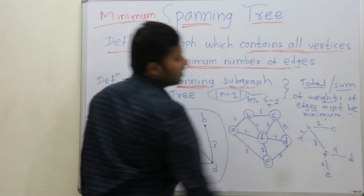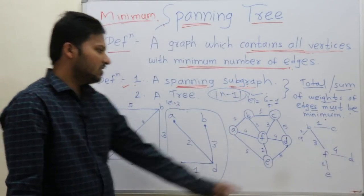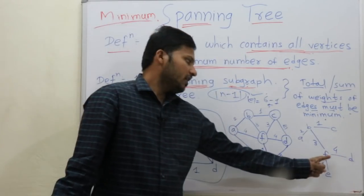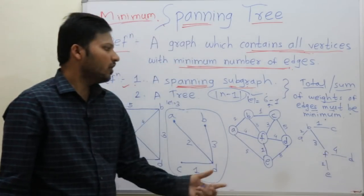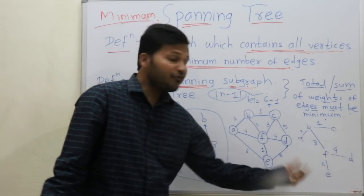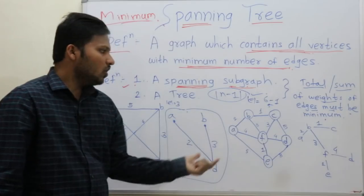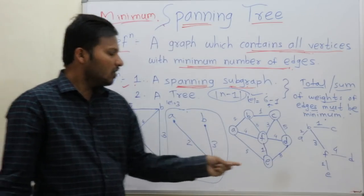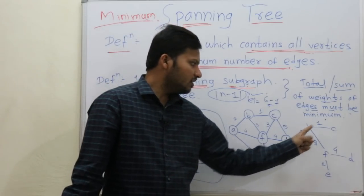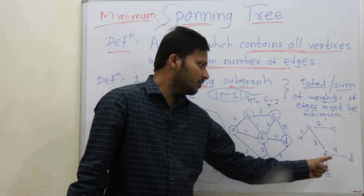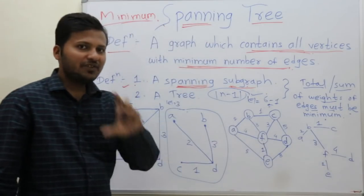Yes — F, D is the edge with value 4, and that does not form a cycle. How many edges are finished? 1, 2, 3, 4, 5 — 5 edges are finished.